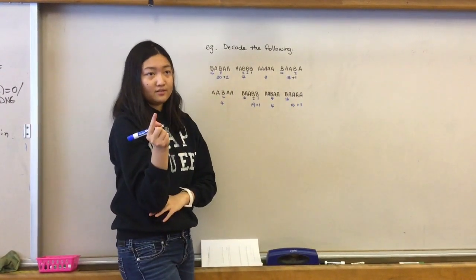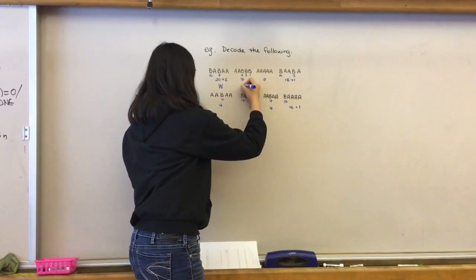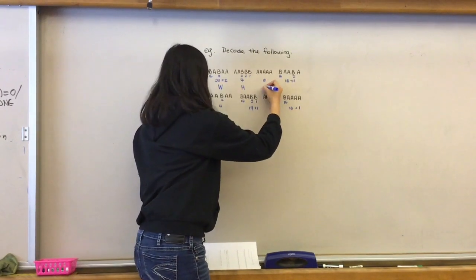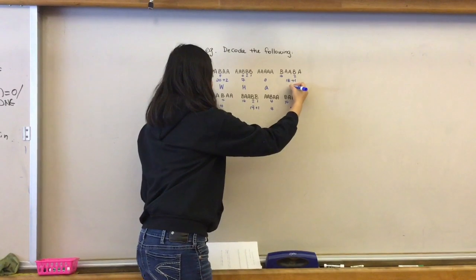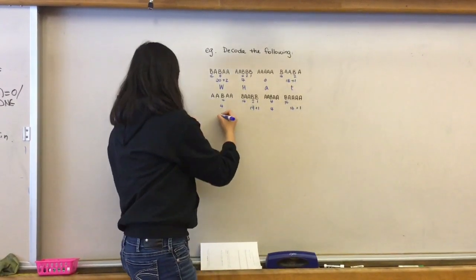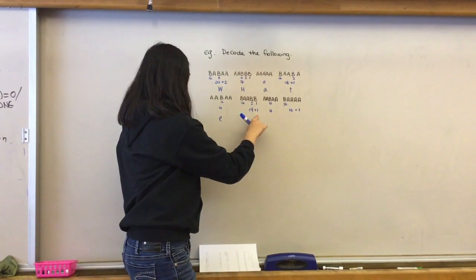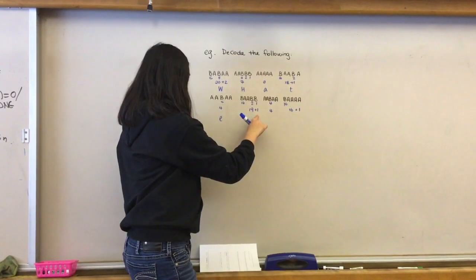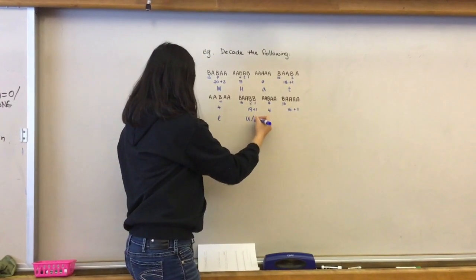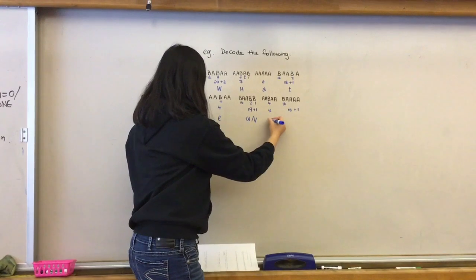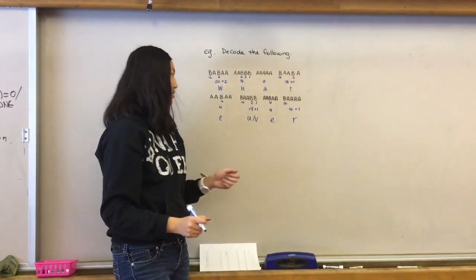22 is w. And then 7 is h. 0 is a. This is 19. 19 is t. 4 is e. 20. Oh, wait. Yeah. If this is a u, it could be a v. And then 4 is an e, and 17 is an r. So whatever is your first word.